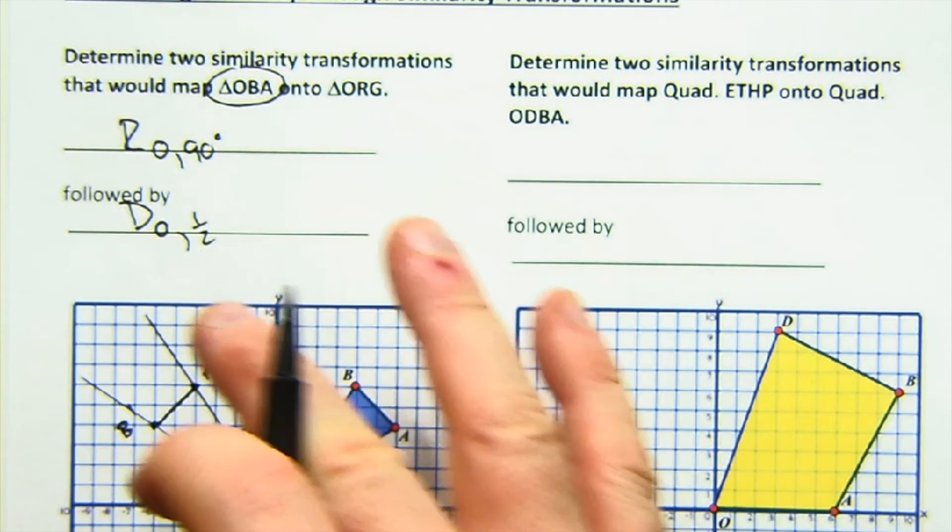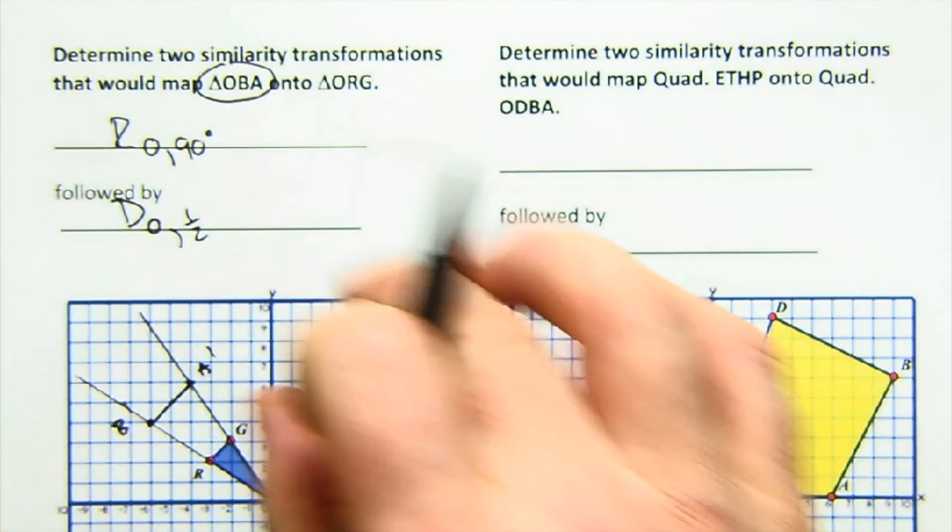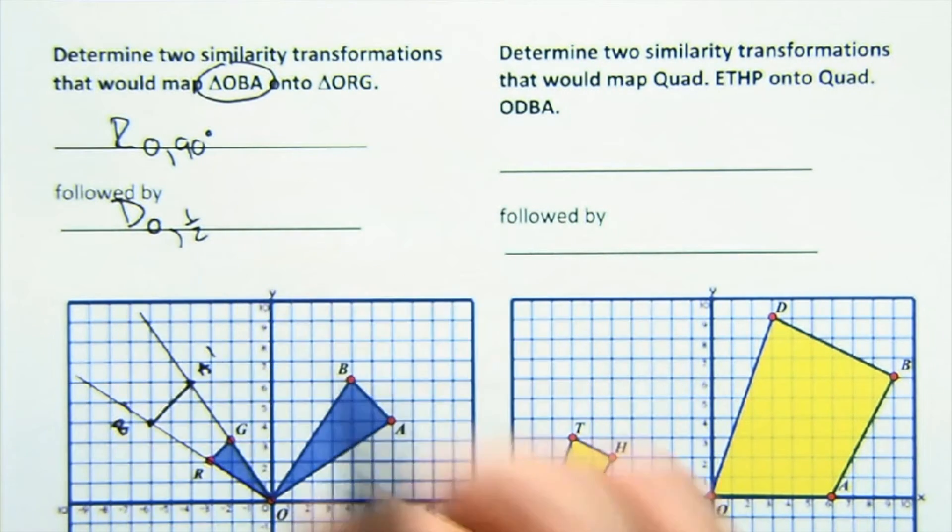So I first rotated and then dilated it by a half to scale it down and onto it. There's actually more than one way to do it. Make sure you are doing it from OBA onto ORG though.